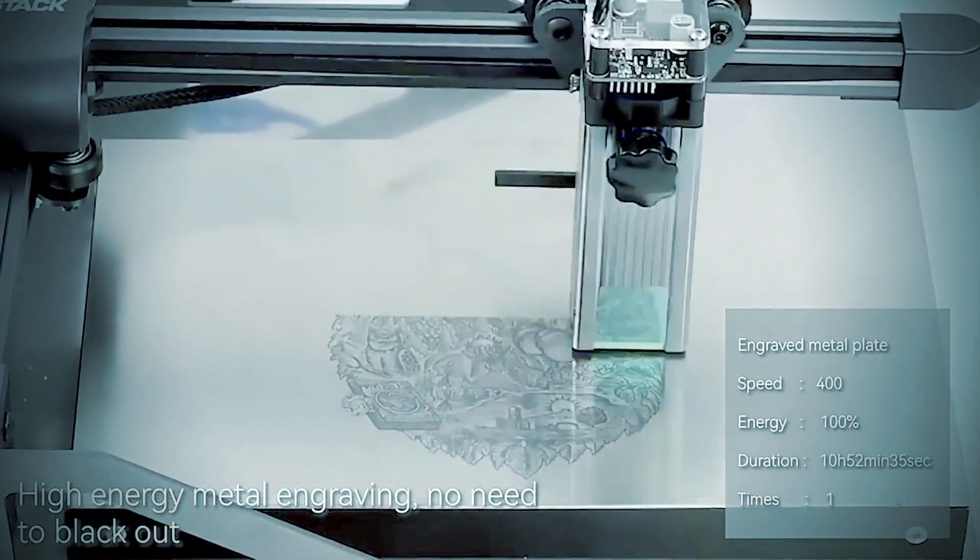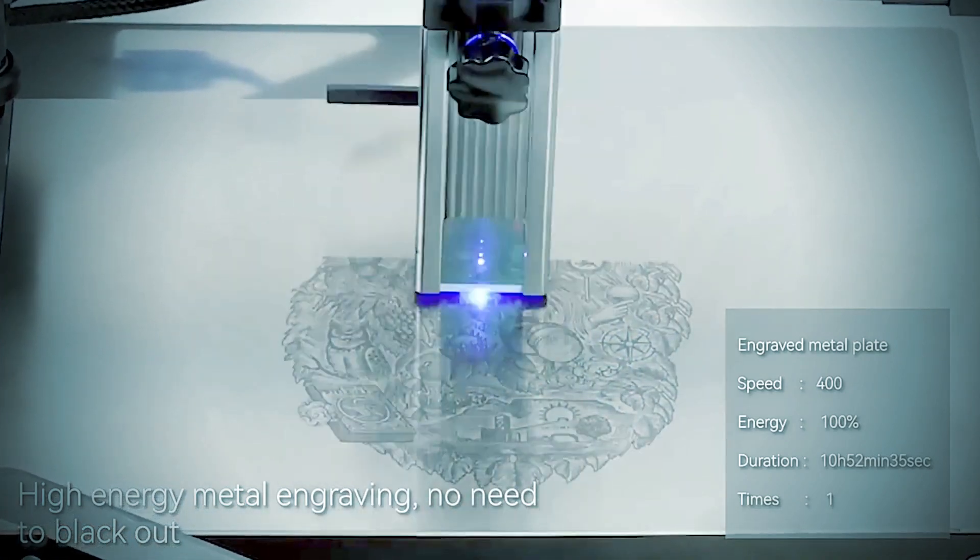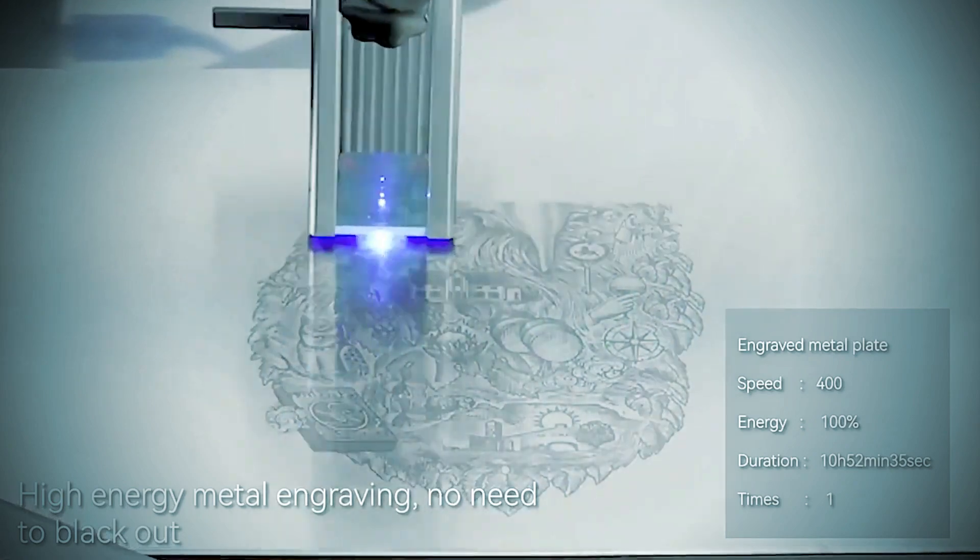While you can look at the laser movement inside, the easy to use Atomstack P7M30 assembles within 5 minutes. 85% of the machine is pre-assembled for you.